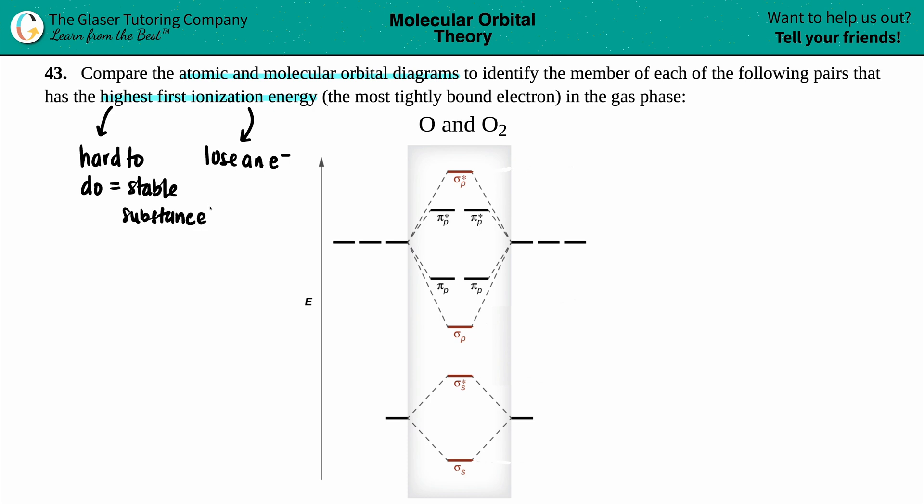So now in this case, we just have to figure out which one is more stable, O by itself or O2? Let's see. So we're just going to compare atomic and molecular orbital diagrams. Just know that your atomic is always on the sides, and that's just because you're dealing with the oxygen on the left and the right side, and your molecular is in the middle because you're dealing with your O2.